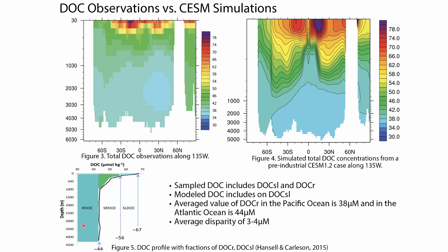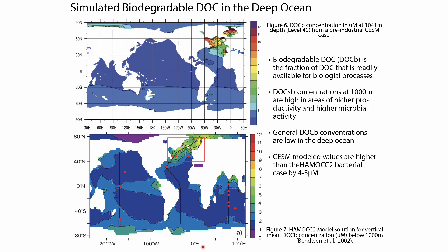This figure demonstrates the different portions of refractory DOC, semi-refractory DOC, and semilabile DOC. We see the largest portion of marine carbon storage is refractory DOC, which is harder to simulate. When we look at semilabile DOC we can also see it as biodegradable DOC, since it's the fraction of DOC readily available for biological processes. When we model just this, we see high concentrations in the North Atlantic, and when we compare that to a previously run bacterial case in HAMOCC2, we see discrepancies — there are some improvements in the western boundaries of some continents, but we still see generally low DOC-B concentrations in the deep ocean.